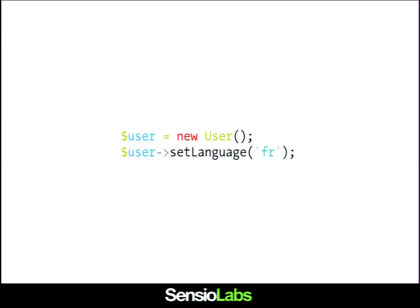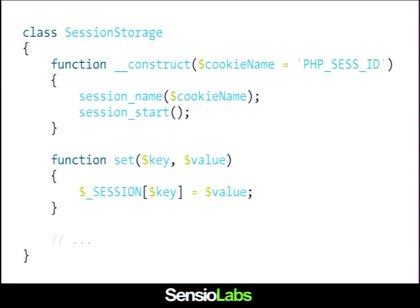To be able to store this information between HTTP requests, we can use PHP sessions. Here is the session storage — a class you can use to store things in a session. It takes one argument for the constructor, the cookie name with a default value. It starts the session when you create a session storage object. And then you can set and get things on the storage. Because the HTTP protocol is stateless, you need two different objects: one to represent user preferences, and one to store them across requests.